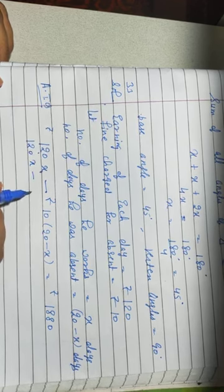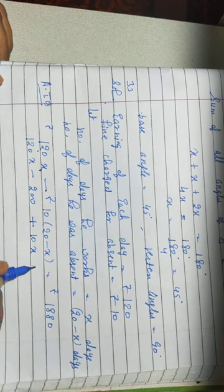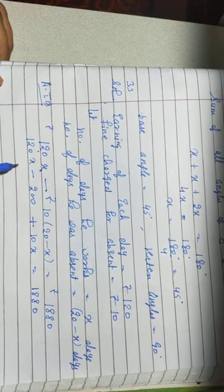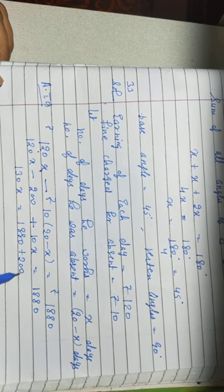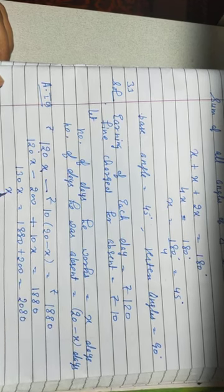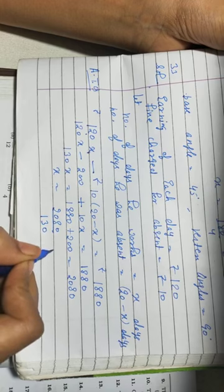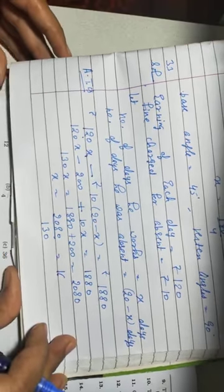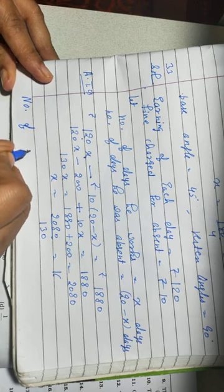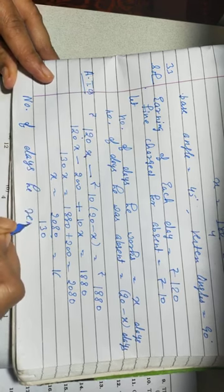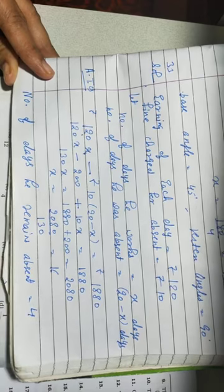Solving: 120x minus 200 plus 10x equals 1880. That gives 130x equals 1880 plus 200, which is 2080. Then x equals 2080 divided by 130, that is equal to 16. That means he walked for 16 days. The question asks for days absent, so number of days he remains absent was 20 minus 16, which is 4 days.